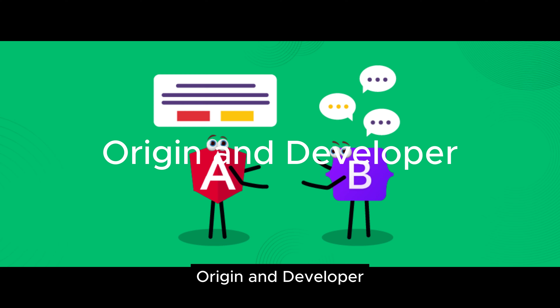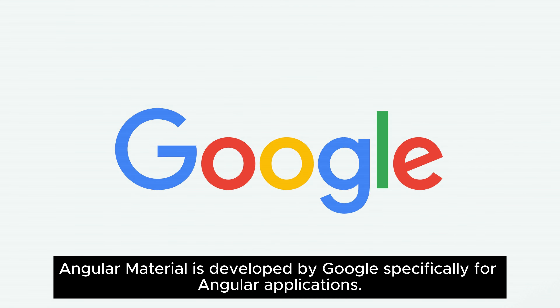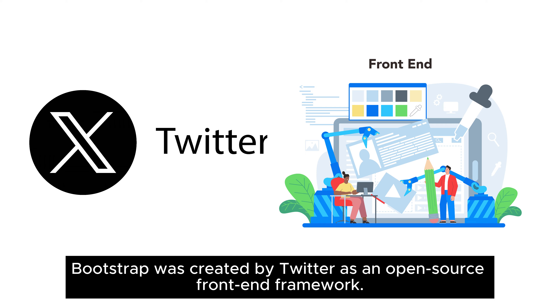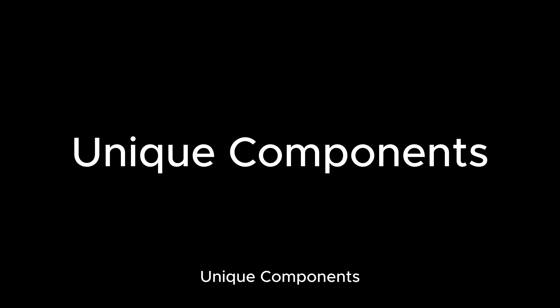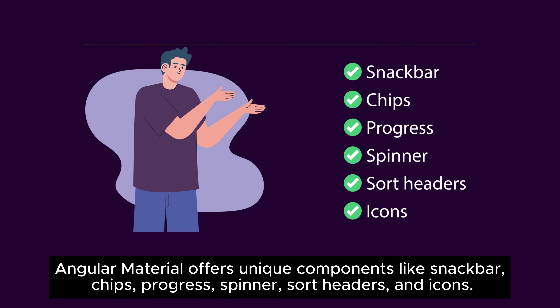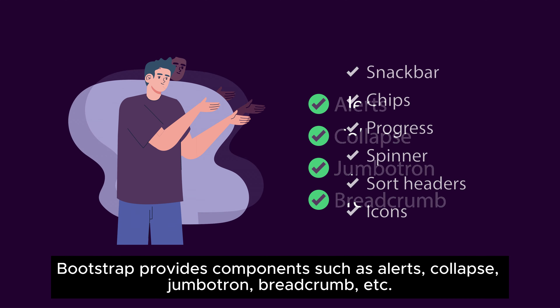Key differences between Angular Material and Bootstrap: regarding origin and developer, Angular Material is developed by Google specifically for Angular applications, while Bootstrap was created by Twitter as an open-source front-end framework. For unique components, Angular Material offers snack bar, chips, progress spinner, sort headers, and icons.